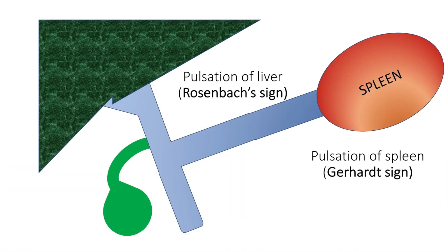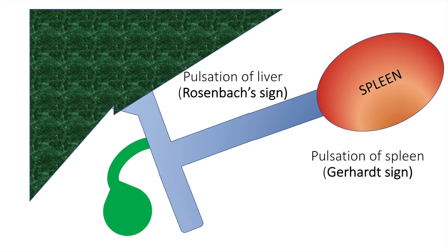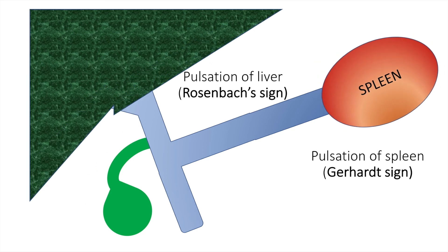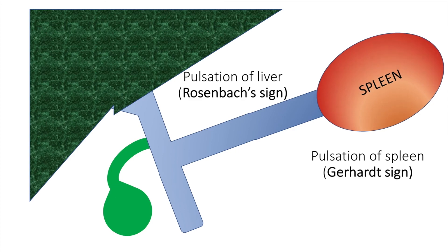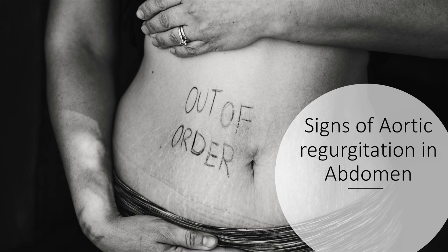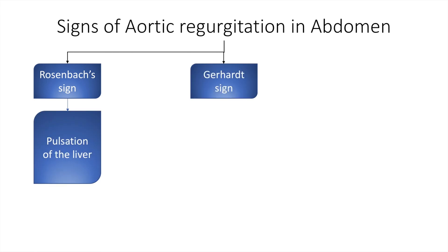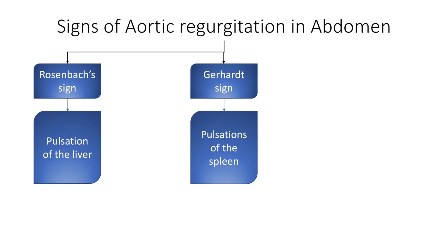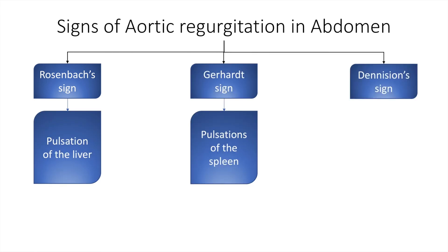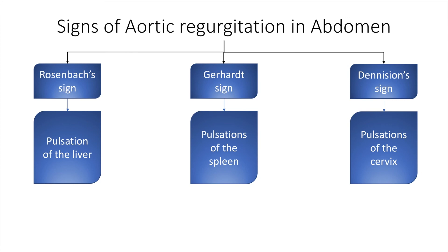There can also be pulsation of the liver, which is called the Rosenbach sign, or pulsation of the spleen, which is called the Gerhard sign. The signs of aortic regurgitation in the abdomen are the Rosenbach sign, the Gerhard sign, and the Denison sign, which is pulsation of the cervix. That's it for our video on arterial pulse. Thanks for watching and we will see you in the next video.